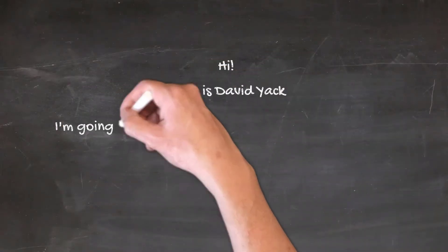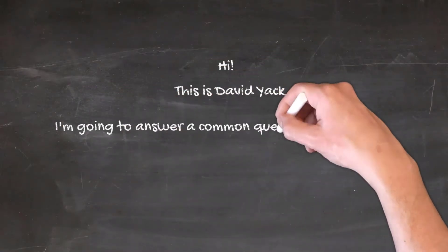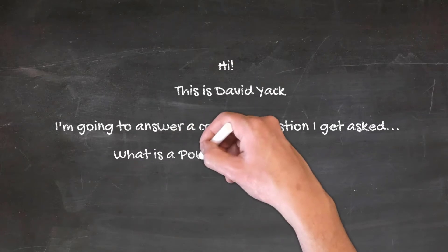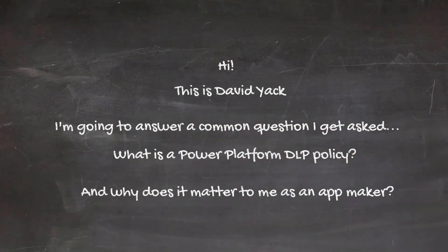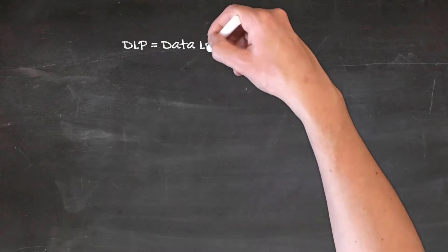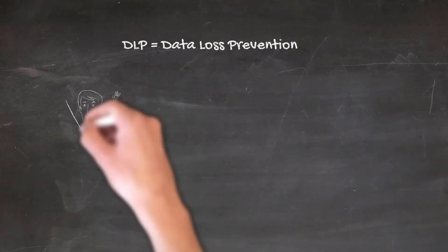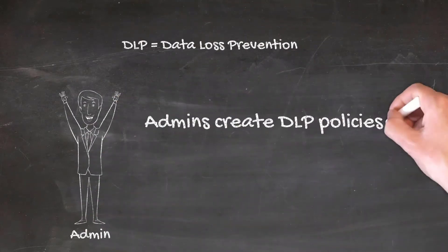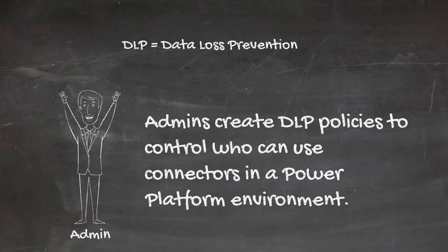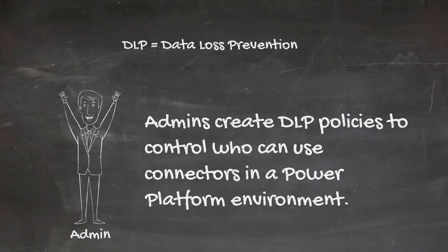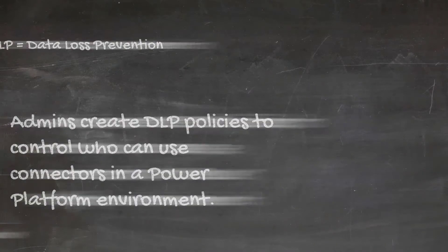Hi, this is David Yak and I'm going to answer a common question I get asked: what is a Power Platform DLP policy and why does it matter to me as an app maker? DLP stands for data loss prevention. Admins create DLP policies to control who can use what connectors in a Power Platform environment. They don't do this because they're mean — they do this because they want to protect the data that an organization has and ensure proper usage according to organizational policies.